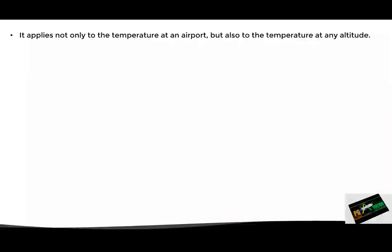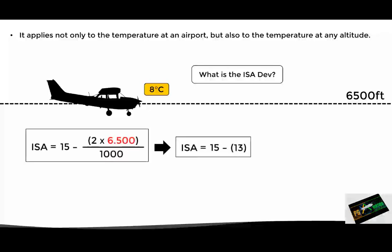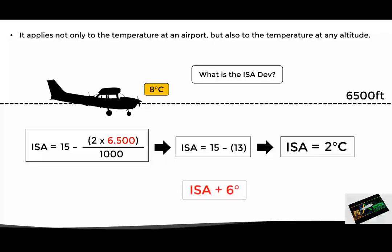This concept does not only apply to airport elevations, but also to any other altitude or level. For example, let's say an aircraft is flying at 6500 feet and the pilot reads on his instruments that the outside air temperature is 8 degrees Celsius. What is the current ISA deviation? First of all, we must determine the standard temperature at 6500 feet. By applying the formula we obtain 2 degrees Celsius. If we then compare the actual conditions of 8 degrees with the standard of 2 degrees, we obtain an ISA deviation of plus 6 degrees. This information can be useful to the pilot, as it allows him or her to make accurate aircraft performance calculations.